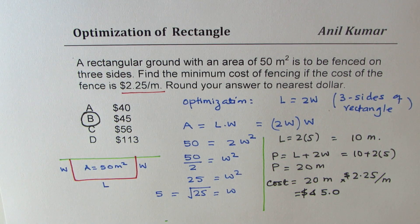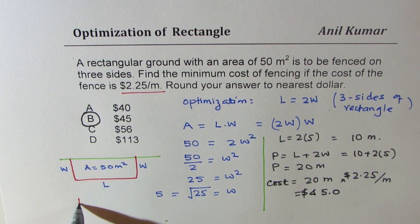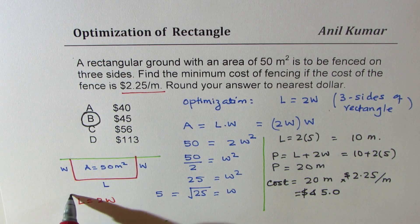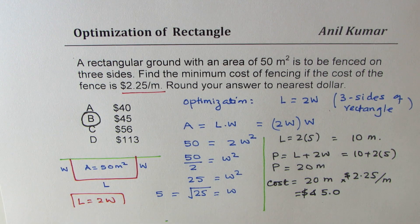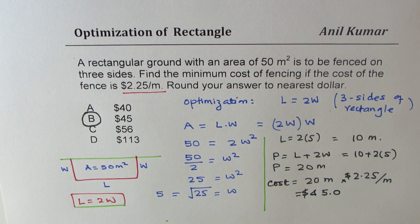Now, to solve this question, we use the strategy that length equals to twice width when we are using three sides. When we are using three sides. If all four sides are there, then it should be a square. Length equals to width.